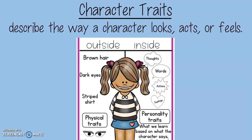For the outside, for this picture — this illustration of the little girl — it says she has brown hair, dark eyes, striped shirt. It's things we see — our physical traits. On the inside, that's more like the character's thoughts, their words, their actions, their feelings. It's what we learn about the character based on what they say, what they do, what they think, and what they feel. We use illustrations a lot to help us when talking about character traits.